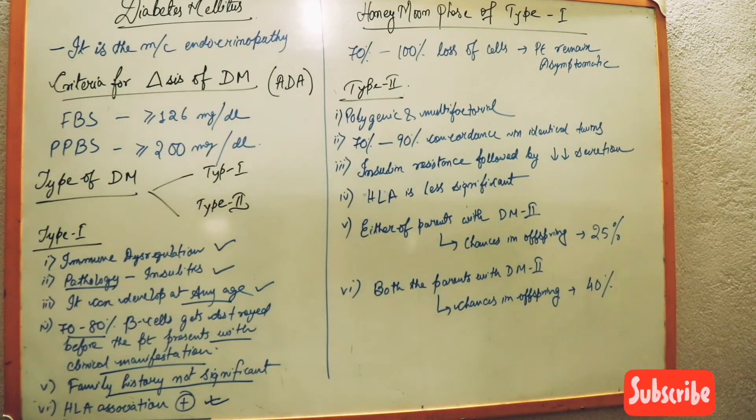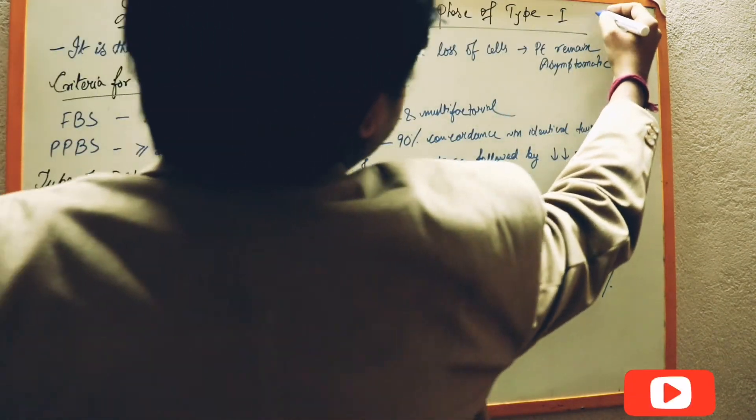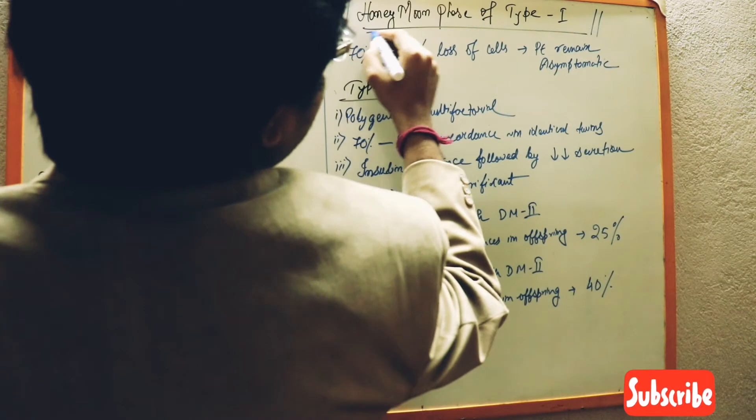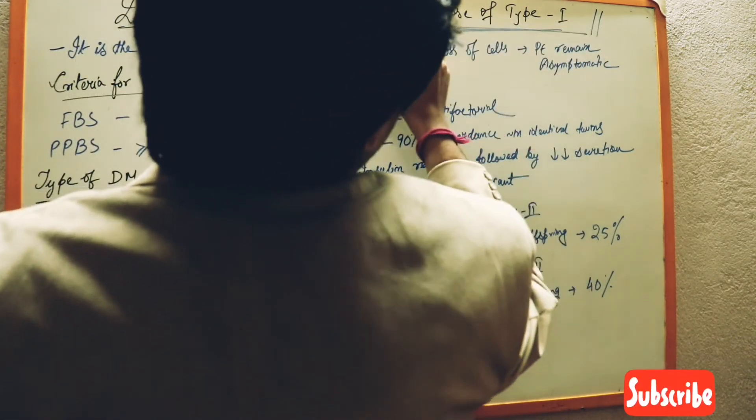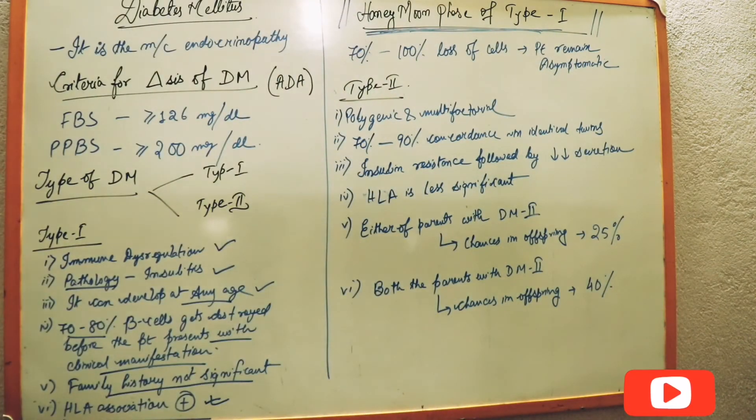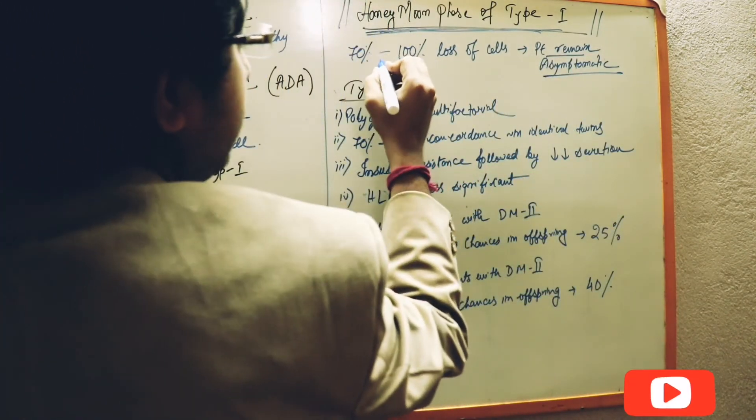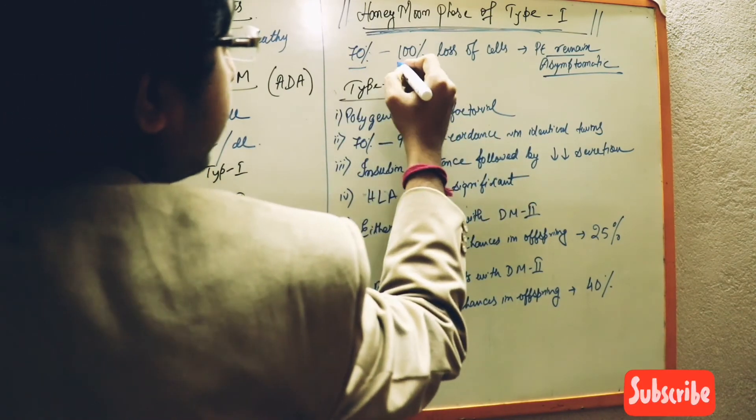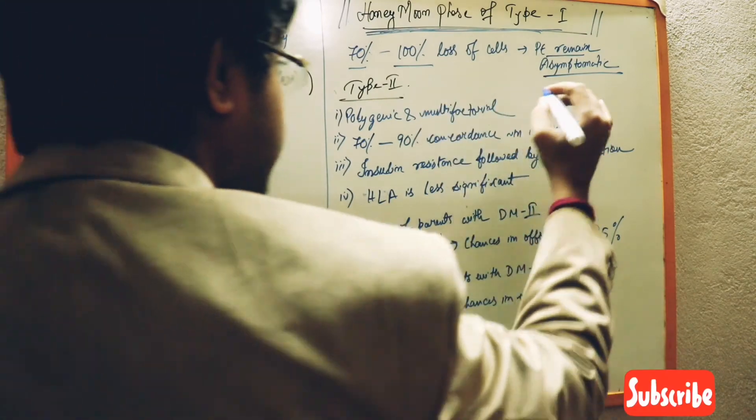Now we have come to a most interesting and important thing: the honeymoon phase of diabetes type 1. We haven't heard yet, right? What is this honeymoon phase of type 1? Now here actually patients remain asymptomatic in the time duration when 70 to 100 percent of the beta cells get destroyed.